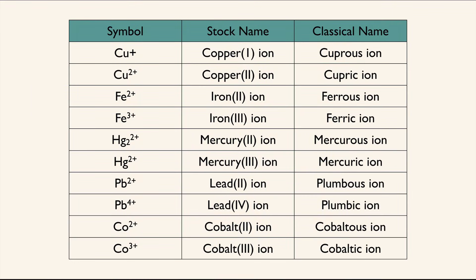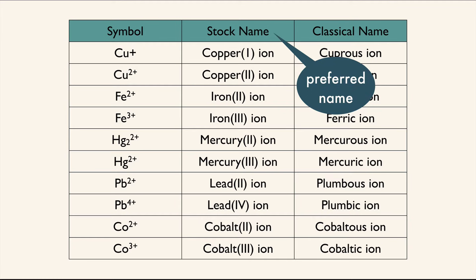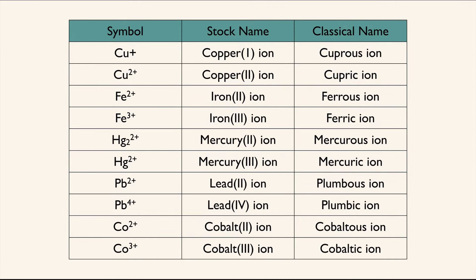One way to know the charge is by the name of the chemical you're using. The symbol for transition metal ions will have the charge, but there are multiple possible charges. In the stock name, you use a Roman numeral to note the charge of the ion. The classical name is not often used, but you may hear it occasionally, especially from some of the older college professors. Words like cuprous ion or cupric ion tell you whether it's the higher or lower charge, but you have to remember which is which. The stock names are a clearer, more straightforward way to name these ions.